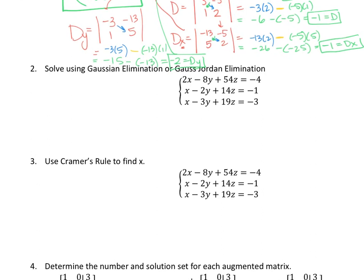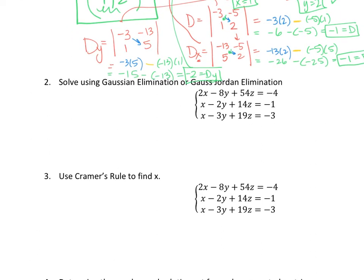Now we'll look at solving a 3x3 matrix. It says to use Gaussian or Gauss-Jordan elimination. Writing the augmented matrix: 2, negative 8, 54, negative 4 in row 1; negative 4, 1, negative 2, 14, negative 1 in row 2... wait — let me write the augmented matrix correctly: rows are 2, negative 8, 54, negative 4; then 1, negative 2, 14, negative 1; then 1, negative 3, 19, negative 3.